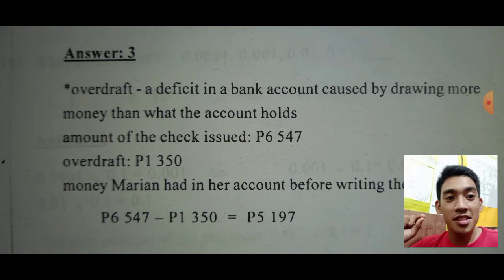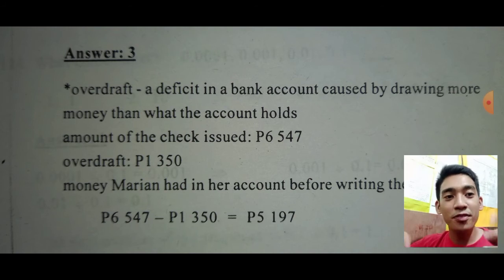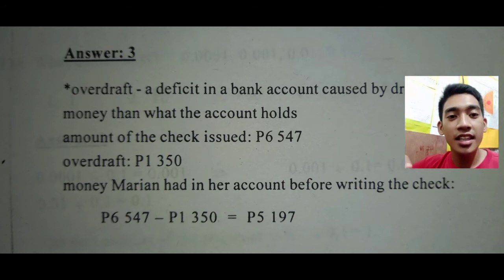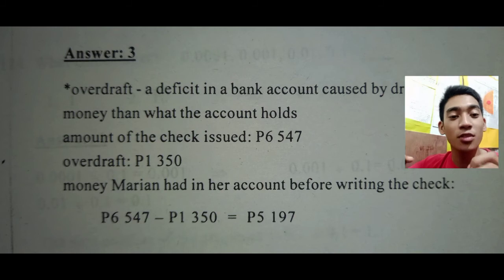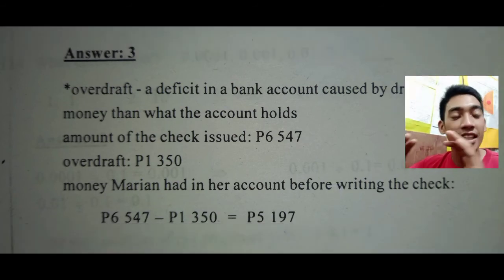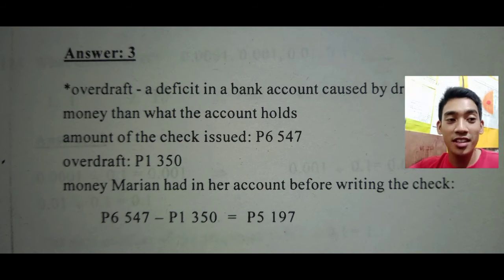The amount of the check issued was 6,547 pesos and the overdraft is 1,350 pesos. So Marian's money before writing the check was 6,547 minus 1,350, which equals 5,197 pesos. That is the money in Marian's account before writing the check. She had only 5,197 pesos but wrote a check for 6,547, creating an overdraft of 1,350 pesos.